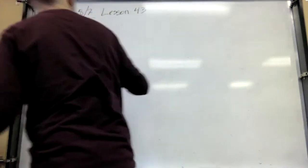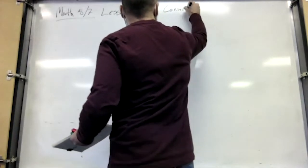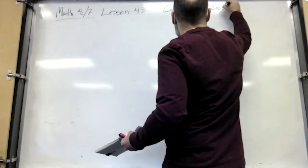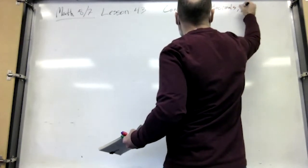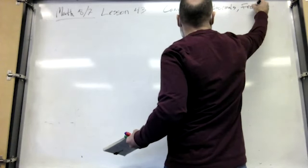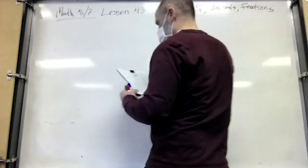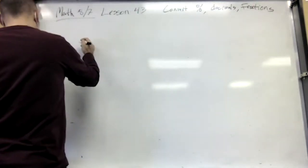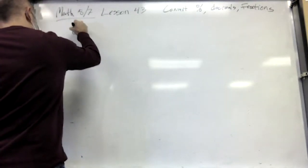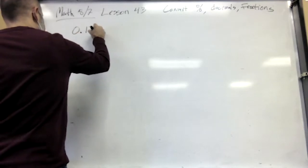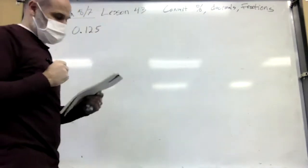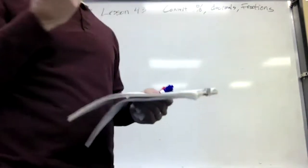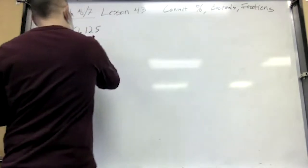We're going to convert percentages, decimals, and fractions. The easiest one is converting the decimal to a fraction. Actually, going from decimal to percent or percent to decimal, all you're doing is moving the decimal two places. But how do you say that number?